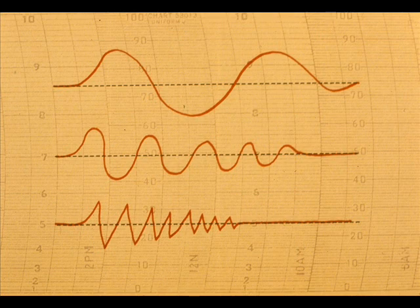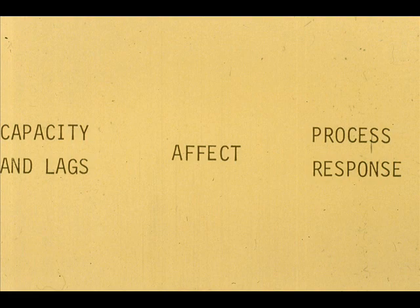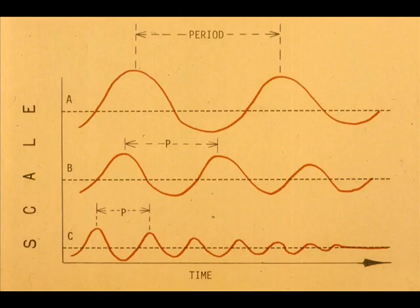All processes do not respond to an upset or a command in the same manner. The ability to respond to a given input is a function of the capacity and lags in the system. The time required for the pen to make one complete cycle on the chart is called the period of the process. The period for process C is short compared to that for process A. The period of one cycle of a process is governed by the capacity and dead time or lag in the system.